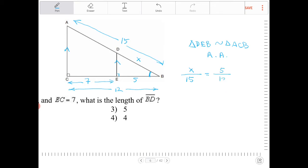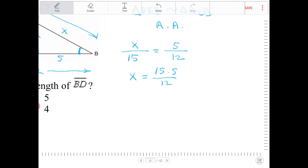Now I can solve for X. So I'm going to multiply both sides by 15, so I get 15 times 5 over 12. Rather than multiplying 15 and 5 together, I noticed that there's a common factor between 12 and 15, and that's a common factor of 3.